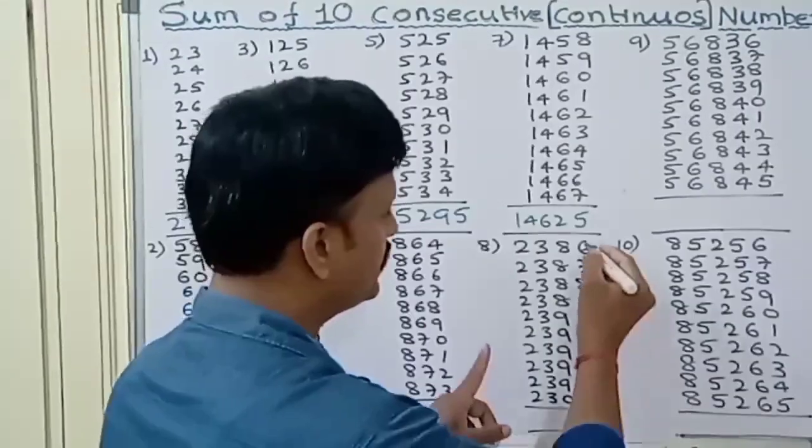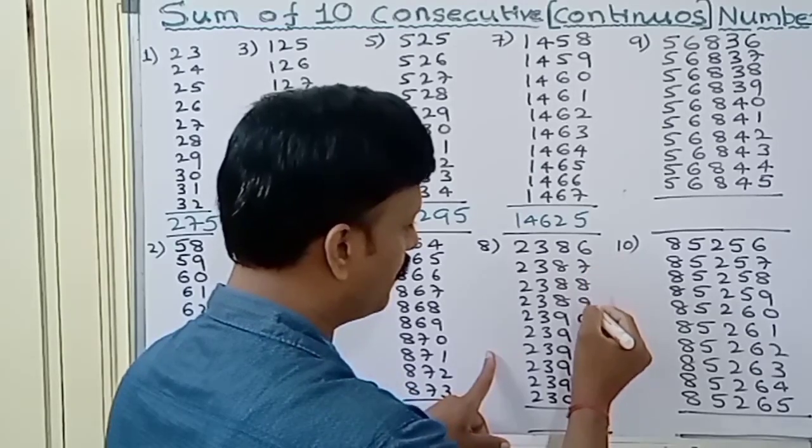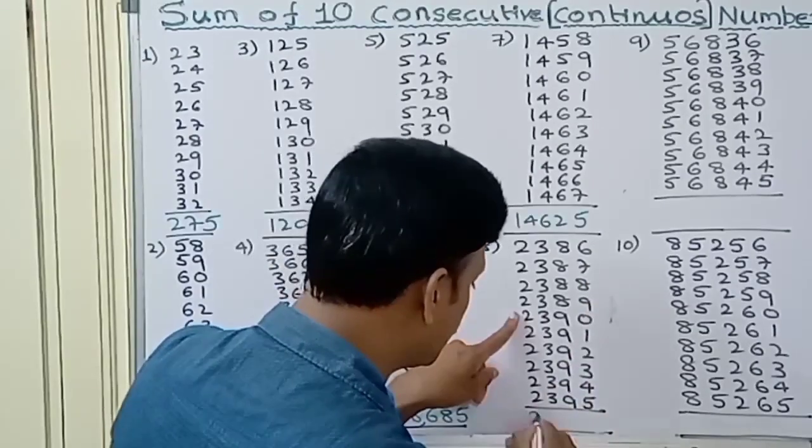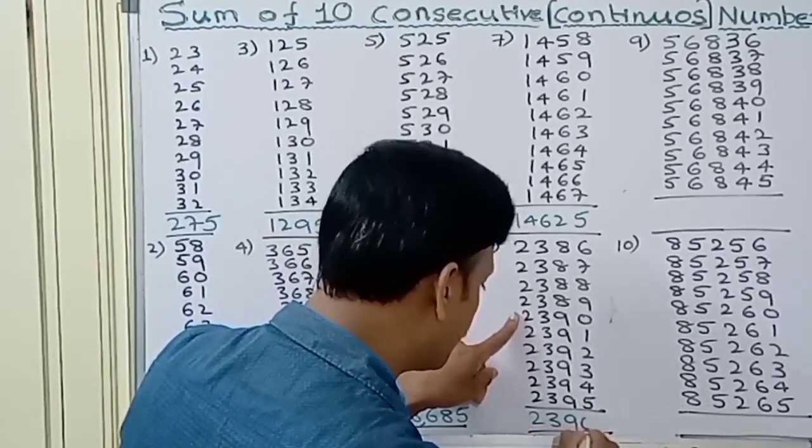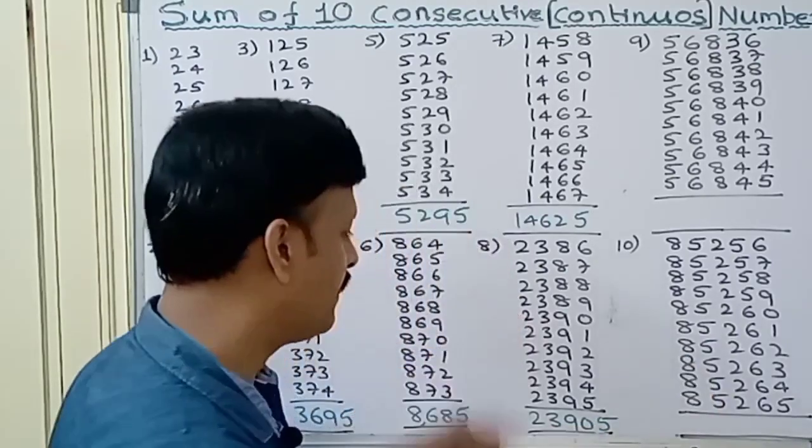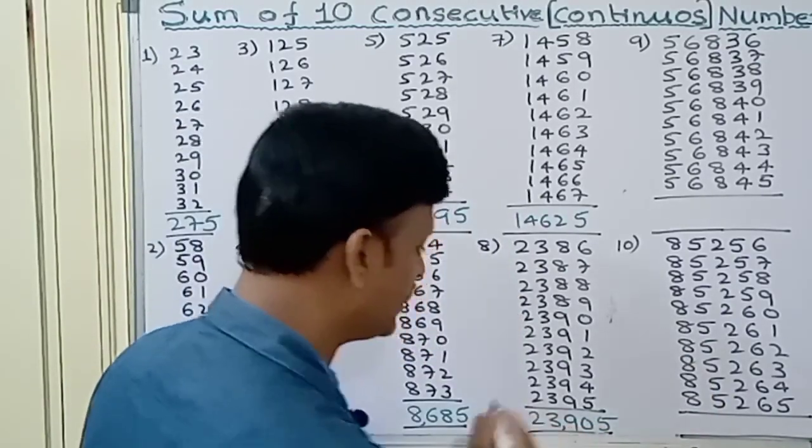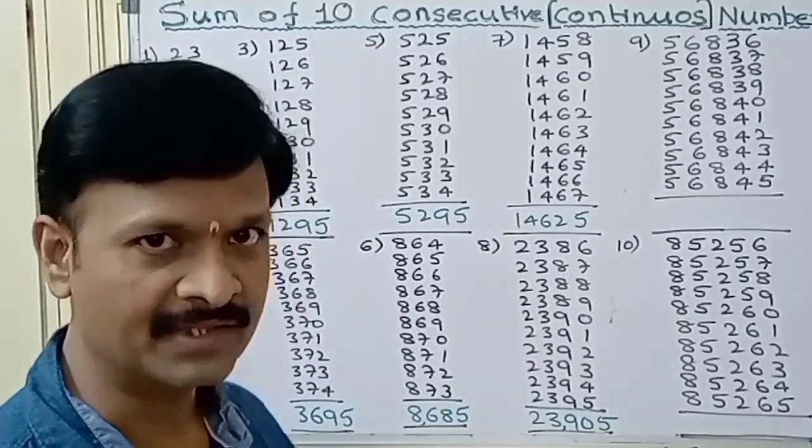Next, the 8th one. Count 1, 2, 3, 4, 5. This is 2390. Put 5. 23905 is the sum of these numbers.